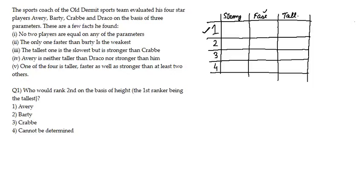Getting back to the second statement: the only one faster than Bharti is the weakest. Only one person is faster than Bharti, which means Bharti should be at second rank in the speed column. And the person X who is faster than Bharti — at rank 1 in speed — should also be at rank 4 in strength, because that person is the weakest.